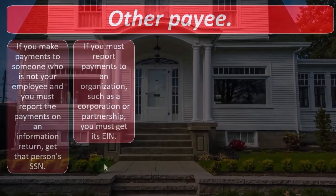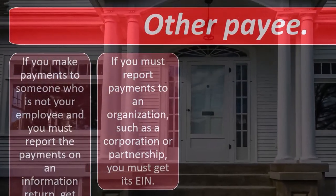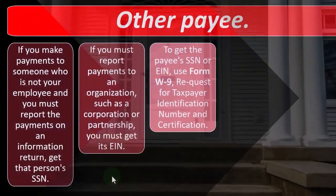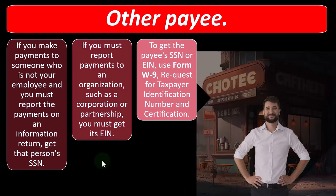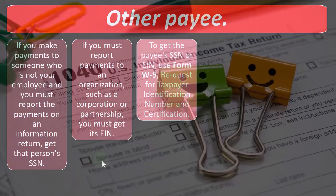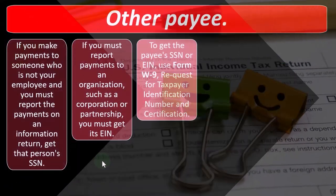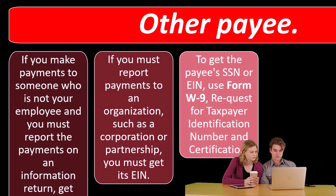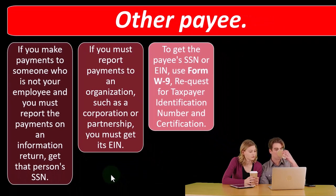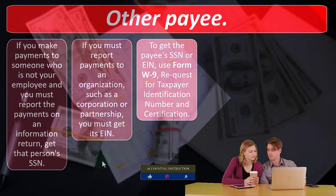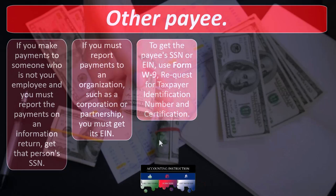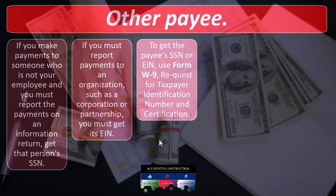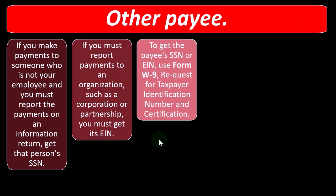If you must report payments to an organization such as a corporation or partnership, you must get its EIN. To get a payee's SSN or EIN — if you're doing business with a contractor and required to issue them a 1099 — make sure you can get their information. Some contractors are reluctant to provide it. If they don't have an EIN, you'll need their Social Security number, or you won't be in compliance with IRS requirements. Think about whether contractors you work with have an EIN so you can meet your reporting requirements.